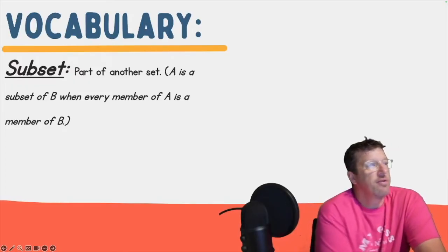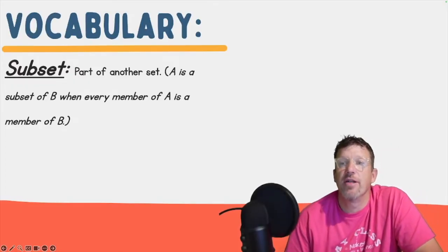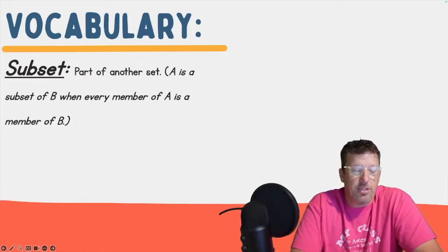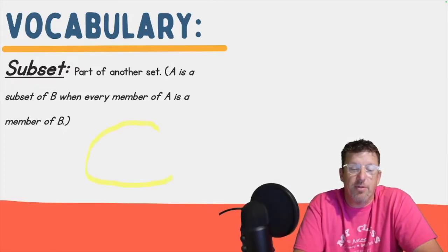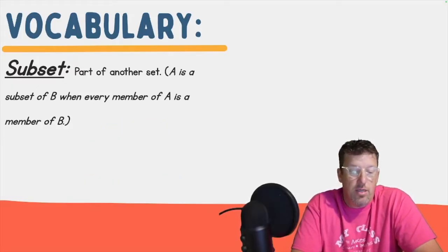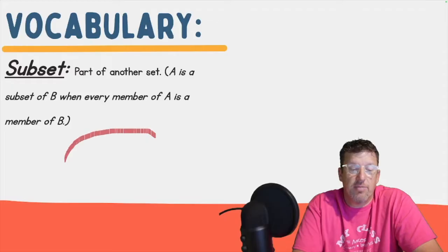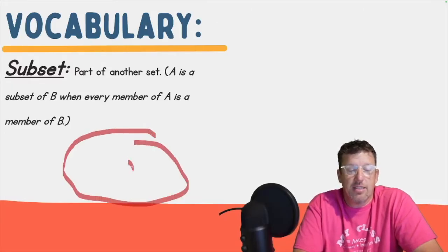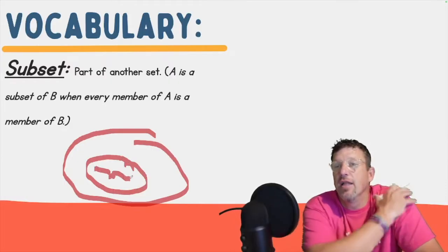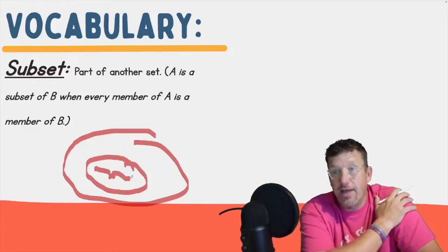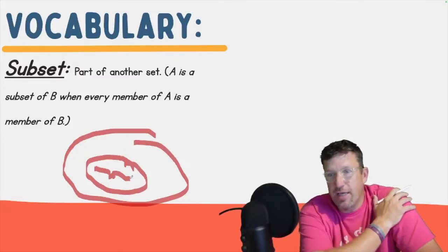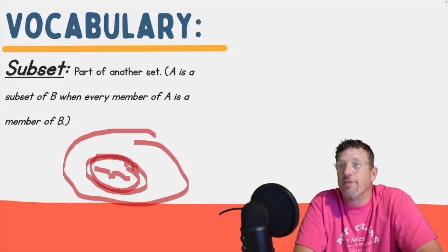Subset simply means it's part of another set. So if you think outside of the number system, let's get creative. Let's say we have this set of people — we have this subset called humans, and then inside of this subset we have people, this group in here, that loves the Yankees. All right, the New York Yankees. They are humans and they love the Yankees. So this is a subset of the humans that love Yankees.